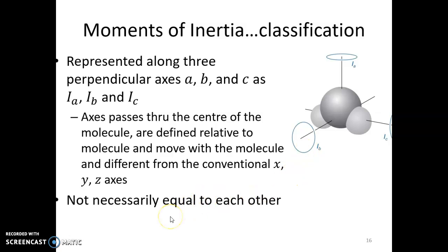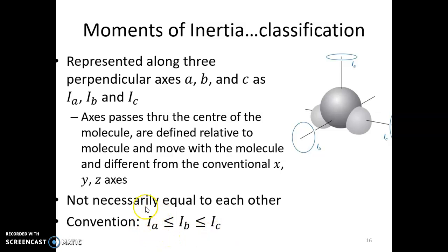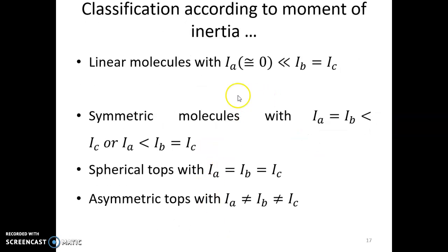By convention, when the moments are not equal, the one with the lowest value is Ia along the a-axis, the next is Ib along the b-axis, and the largest is Ic along the c-axis. The classification is based on their relative values to each other.